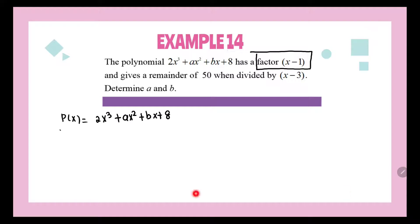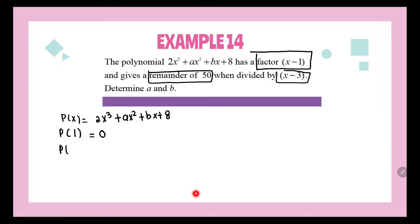If x − 1 is a factor, when we substitute 1 into the polynomial we get remainder 0. The second piece of information is that the remainder is 50 when divided by x − 3, which means P(3) = 50.